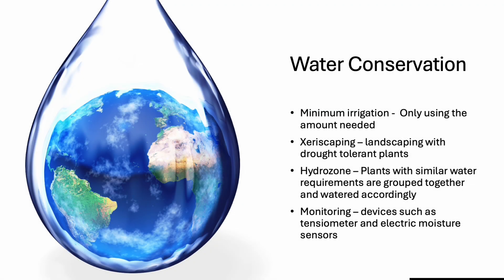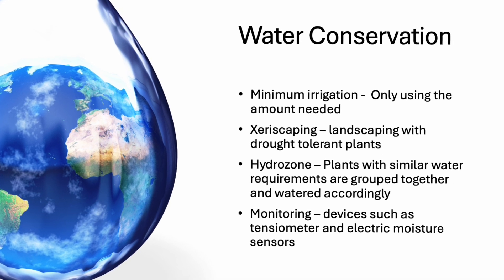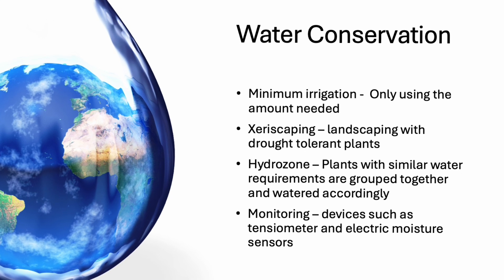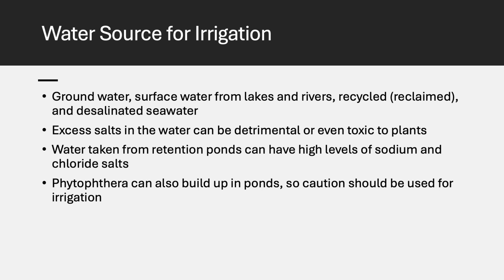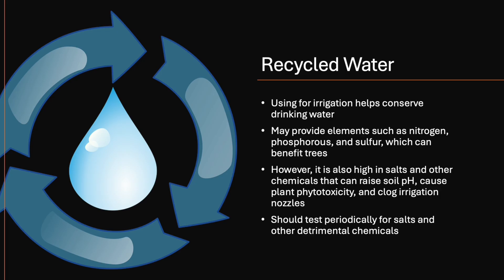Strategies to conserve water include using only the minimum amount of irrigation needed, xeriscaping — which means using drought-tolerant plants — and grouping plants with similar water needs into hydrozones. An important factor is the water source used for irrigation, such as groundwater, surface water, recycled water, or desalinated seawater. Caution: recycled water may be high in salts, which can raise soil pH or cause plant toxicity, though it helps conserve drinking water and may provide elements like nitrogen, phosphorus, and sulfur.